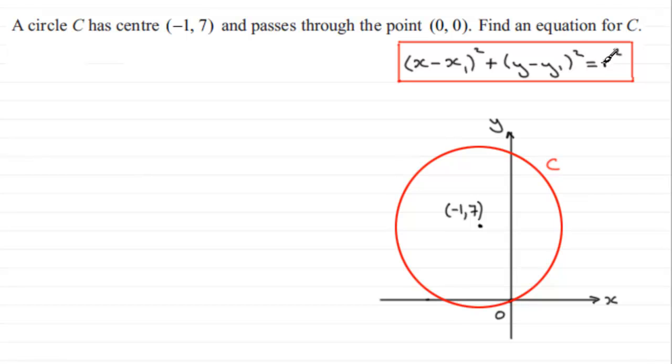What we haven't got is the radius, and the radius then is say from here to any point on the circumference, but obviously it would make sense just to take it back to the origin.